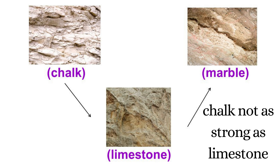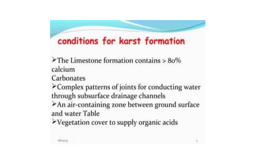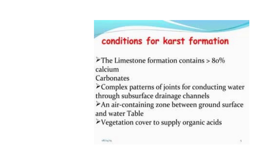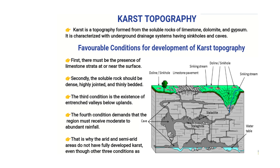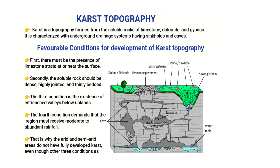Karst is not typically well developed in chalk because chalk is highly porous rather than dense, so the flow of groundwater is not concentrated along fractures. Karst is also most strongly developed where the water table is relatively low, such as in uplands with entrenched valleys and where rainfall is moderate to heavy.